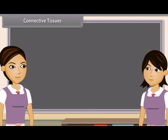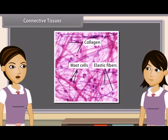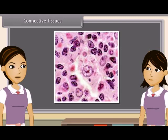Connective tissues bind different organs and parts of various organs together. The cells of connective tissues are living, separated from each other and very few in numbers. Gel-like intercellular substance called matrix forms the main bulk of the connective tissue. Matrix is fibrous in nature and binds other tissues.